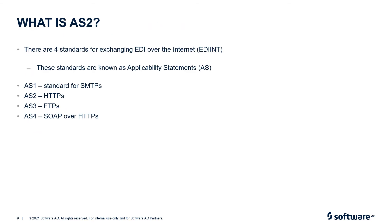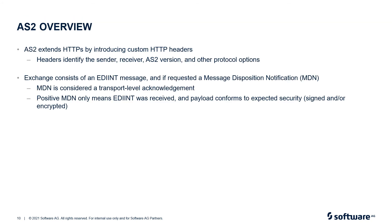Let us now have a quick look at AS2. There are four standards for exchanging EDI over the internet, known as applicability statements, abbreviated as AS. AS1 is standard for SMTP. AS2 is standard for HTTPS. AS3 is standard for FTP. AS4 is standard for SOAP over HTTPS. AS2 extends HTTPS by introducing custom HTTP headers. Exchange consists of an EDI INT message and, if requested, a message disposition notification which is MDN. MDN is considered a transport-level acknowledgement. A positive MDN only means EDI INT was received and the payload conforms to expected security — signed or encrypted.